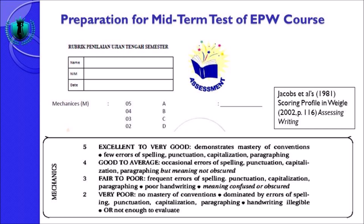Untuk nilai 5: few errors of spelling, punctuation, capitalization, paragraphing — kesalahannya tidak begitu mencolok. Untuk nilai 4 atau good to average: occasional errors of spelling, punctuation, capitalization, paragraphing — kesalahannya lebih banyak dibandingkan nilai 5, tapi meaning not obscured. Yang ketiga, fair to poor: frequent errors of spelling, punctuation, capitalization, paragraphing — lebih banyak dibandingkan occasional. Kemudian poor handwriting — tulisan tangannya jelek, susah dibaca. Bagi mahasiswa yang nanti UTS atau masuk dunia kerja, tulisan tangan anda harus rapi, teratur, dan bisa dibaca.